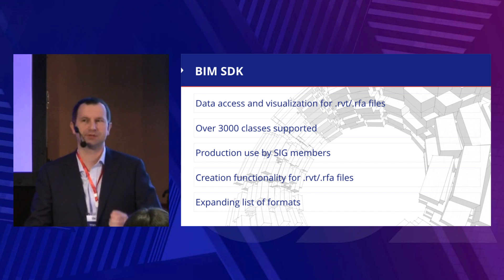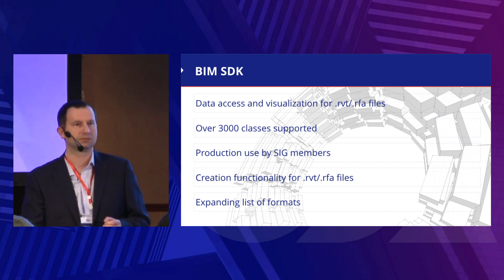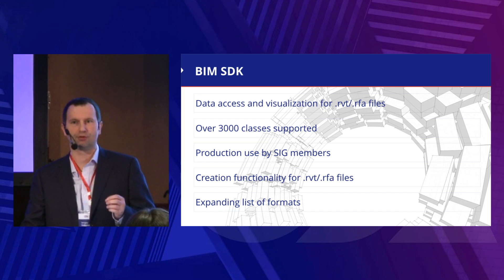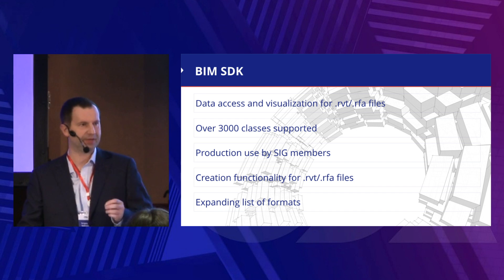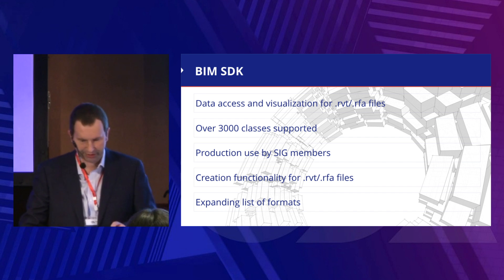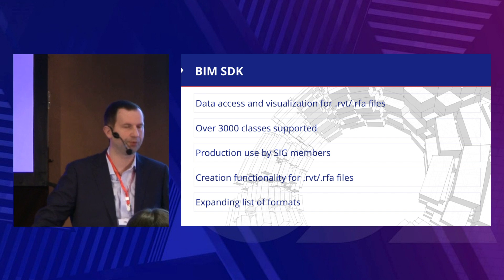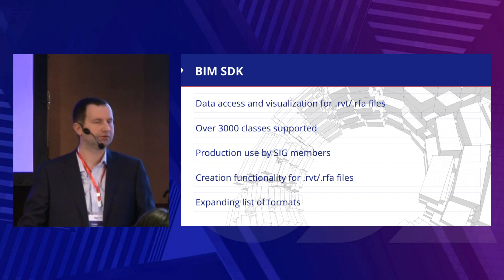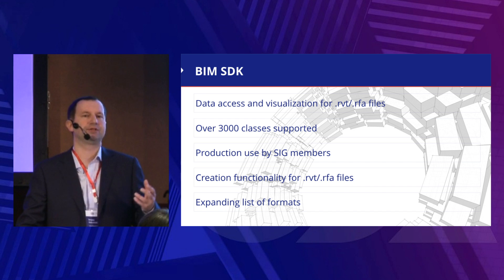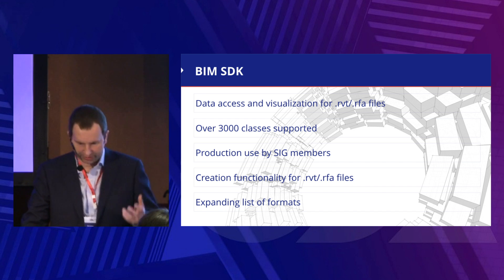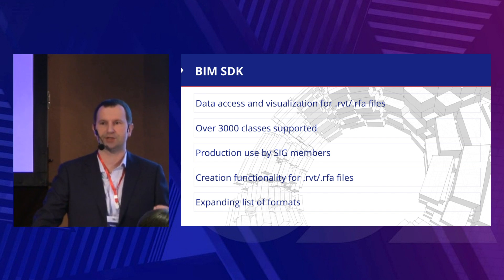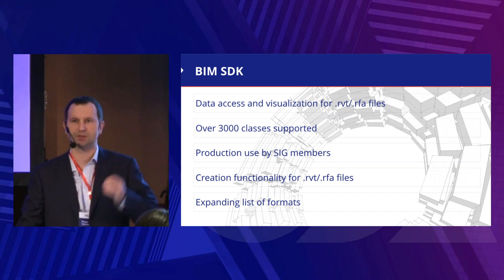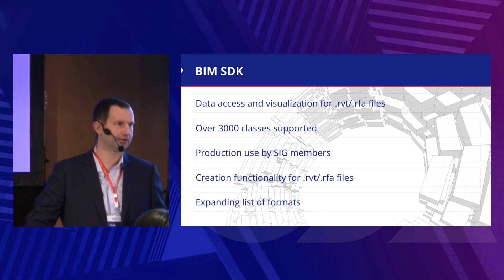Now BIM SDK reads Revit 2015 and later versions and writes them back to the latest version. It provides access to all properties via a flexible and quite powerful API, and supports enhanced visualization. This year we added built-in parameters support, sectioning, and creation of initial elements such as extrude, revolve, and simple walls. Creation of elements is an initial stage yet, but today you will see the progress we made in this direction — progress that proves our ability to solve this task and provide a full set of functionality for Revit files.